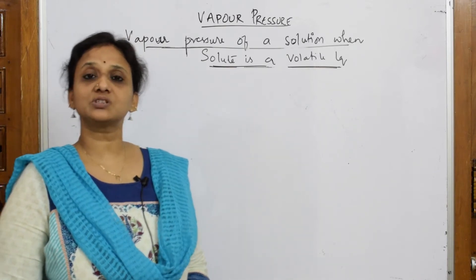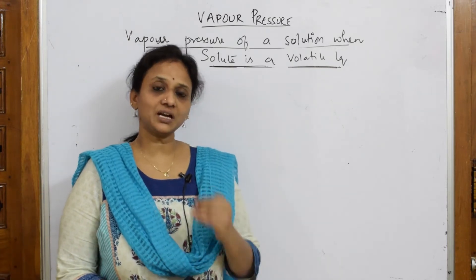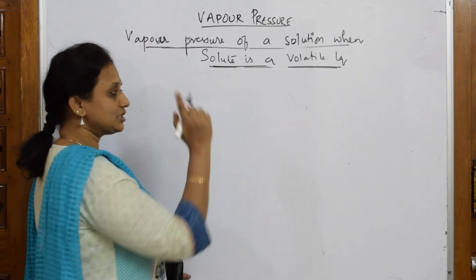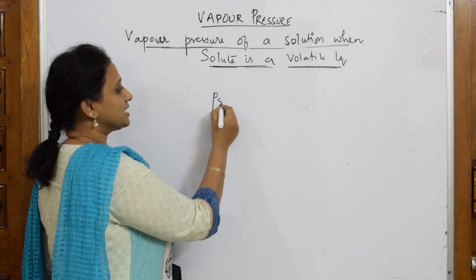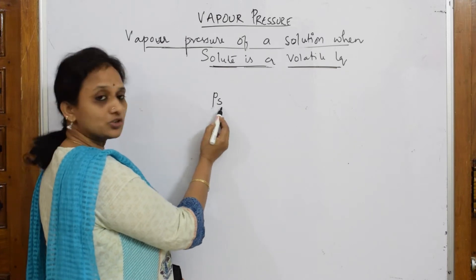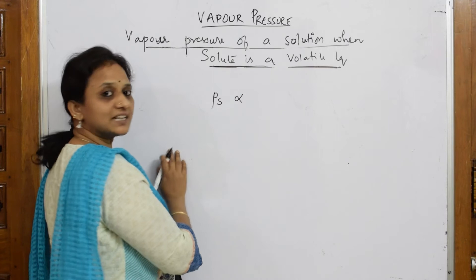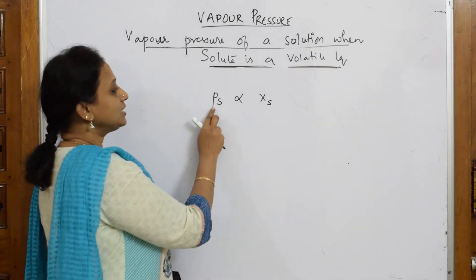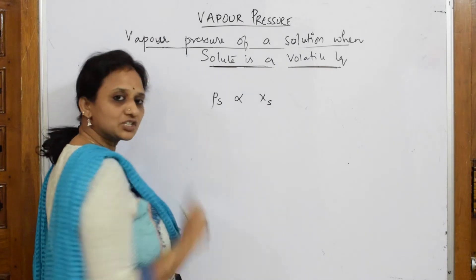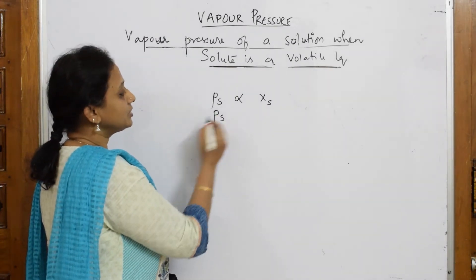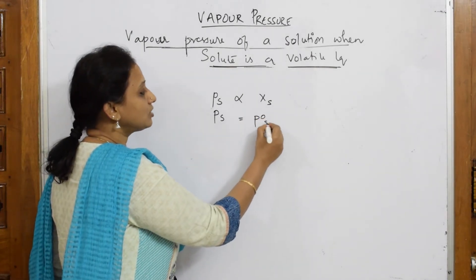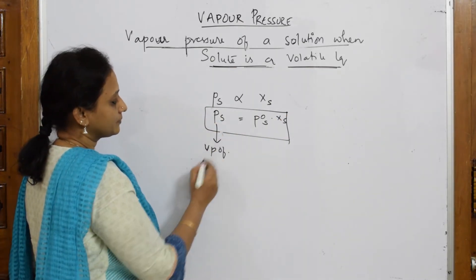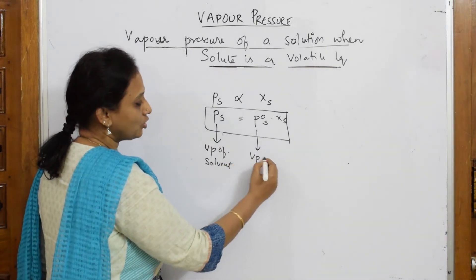I also gave you the introduction for vapor pressure. From that, I gradually went into a topic called Raoult's law. In Raoult's law, there are two important concepts. PS — the vapor pressure of pure solvent — is always directly proportional to the mole fraction of the pure solvent. If I take out the proportionality constant, the vapor pressure of the solvent equals P-naught-S into X-S.